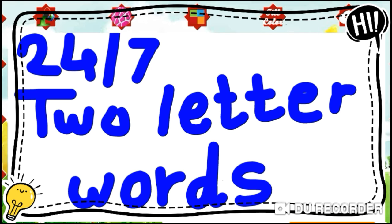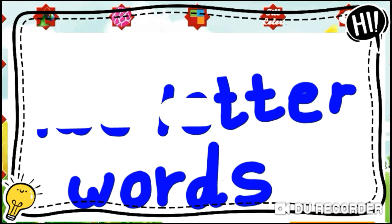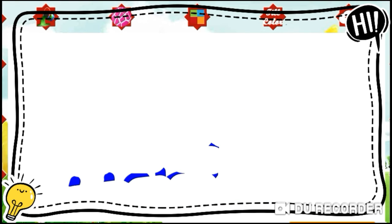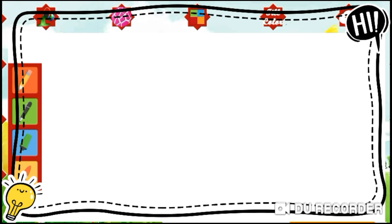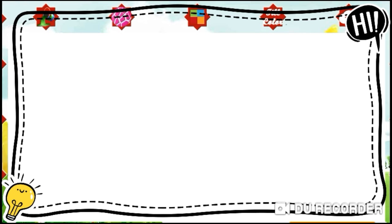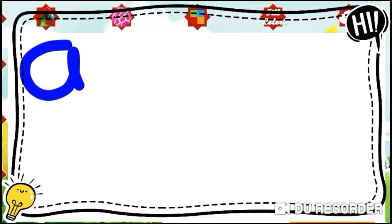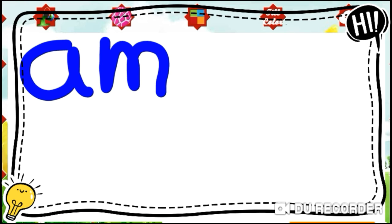We will start with 'am' — A for apple, M for mango. A-M, 'am'. These two letters you have to write between two blue lines only.